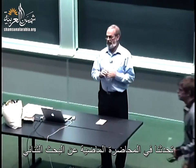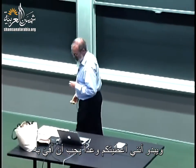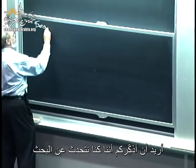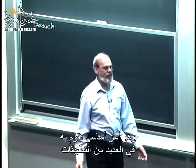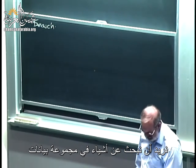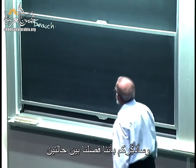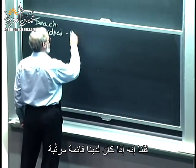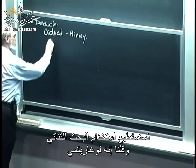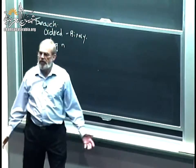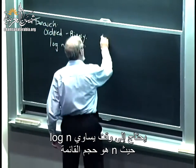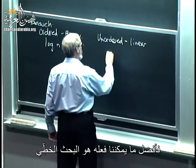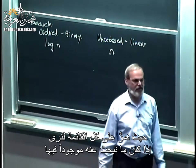Last time we were talking about binary search. We were talking about search, which is a very fundamental thing that we do in a whole lot of applications — we want to find things in some data set. We separated out two cases: if we had an ordered list, we could use binary search, which was logarithmic — log n time, where n is the size of the list. If it was an unordered list, we were basically stuck with linear search, order n.